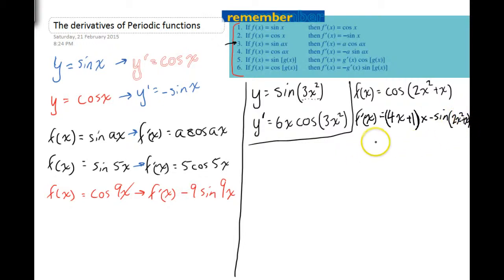Now that's a bit ugly, so let's just neaten it up a bit. 4x plus 1 times negative sine, 2x squared plus x. Let's just move that negative to the front. Negative 4x plus 1 times sine 2x squared plus x. I'm just avoiding having that negative in there, otherwise it could look like 4x plus 1 minus sine 2x squared plus x.